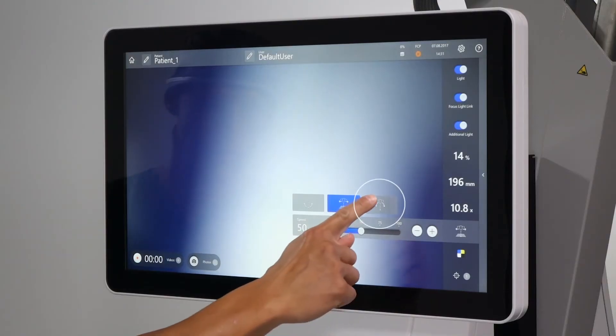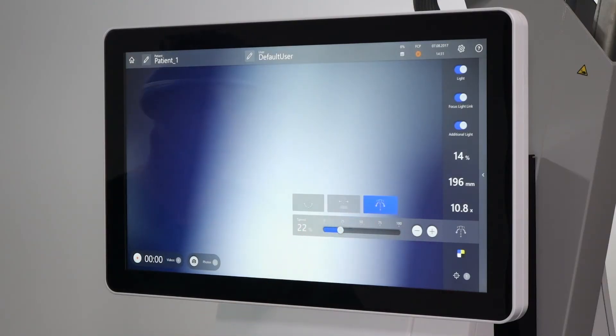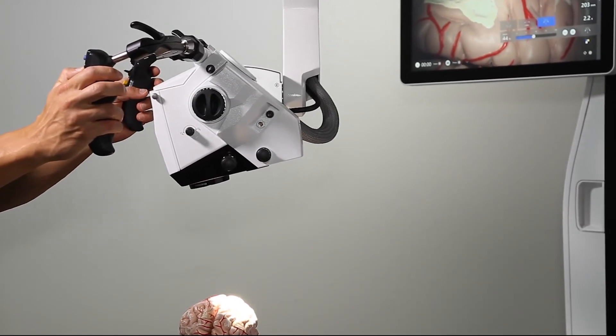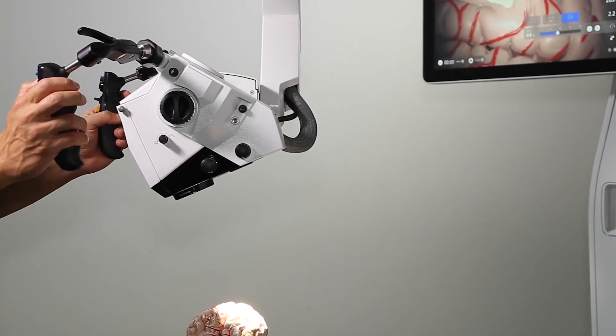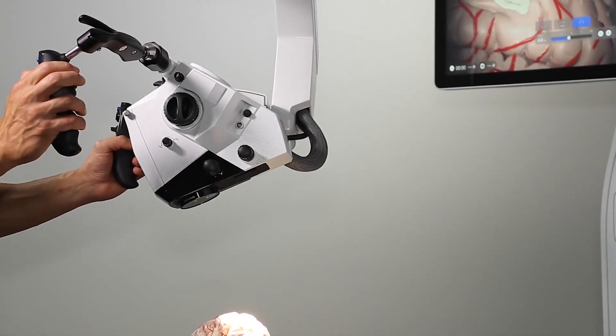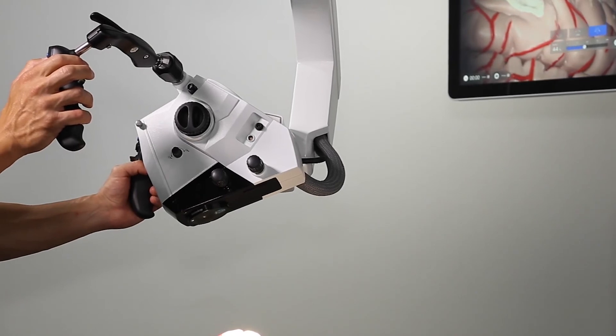The third mode is Motorized Point Lock movement. Motorized Point Lock enables movement along the focus point, changing the angle of observation without losing the anatomical focus. Motorized Point Lock restricts Z-axis movement.